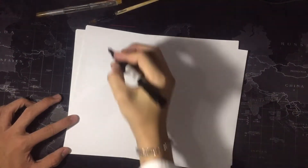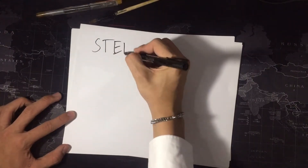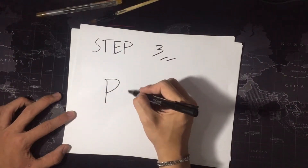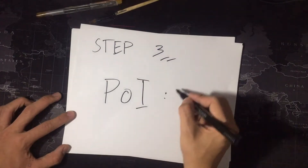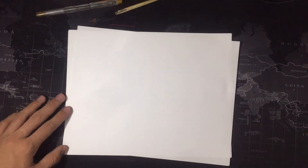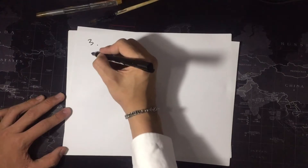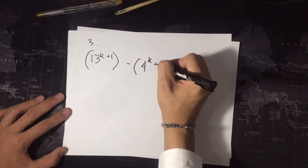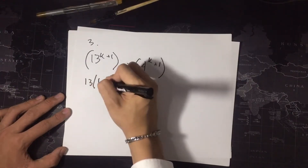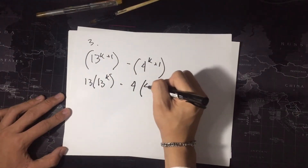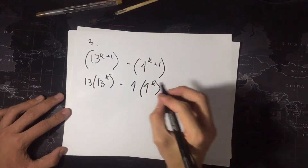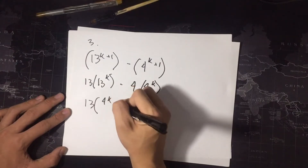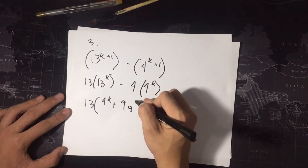Step 3 is the proof of induction. Here, we solve for the values of k in order to see if our problem holds true. In the proof of induction, 13 raised to k minus 4 raised to k becomes 13 raised to k plus 1 minus 4 raised to k plus 1. We factor out 13 from 13 raised to k plus 1 and factor out 4 from 4 raised to k plus 1, making 13 times 13 raised to k minus 4 times 4 raised to k.